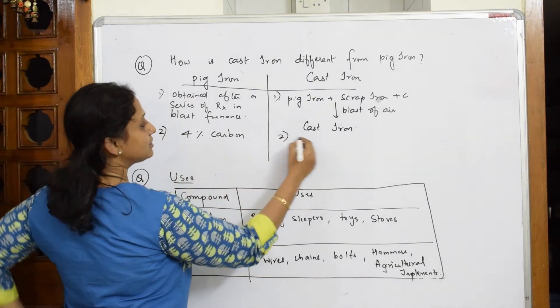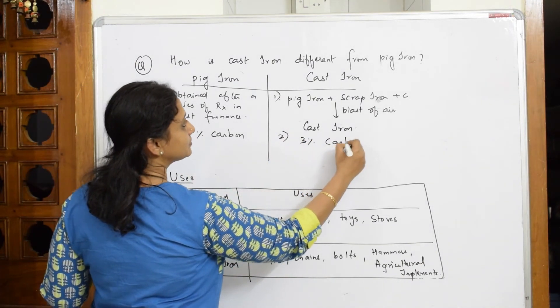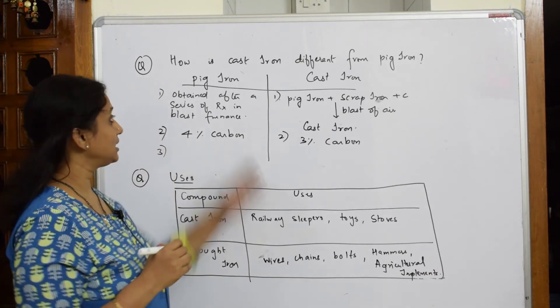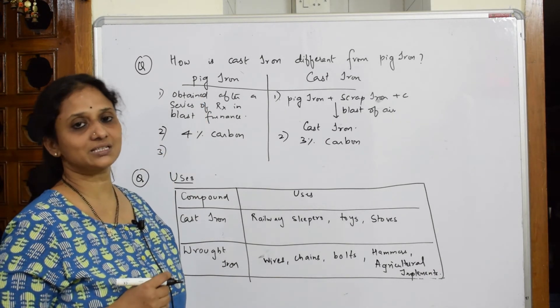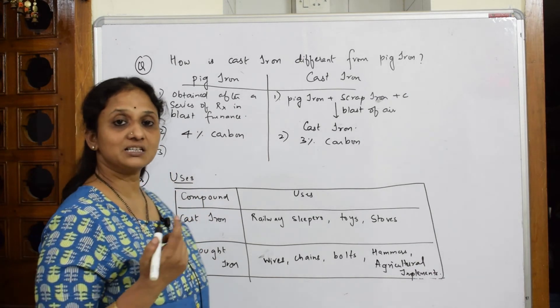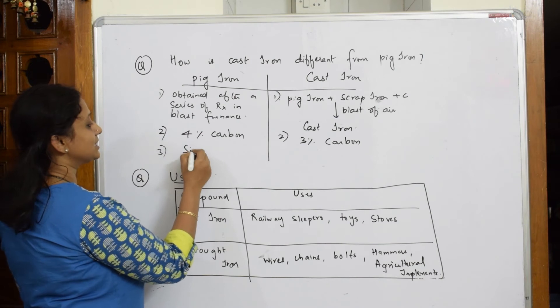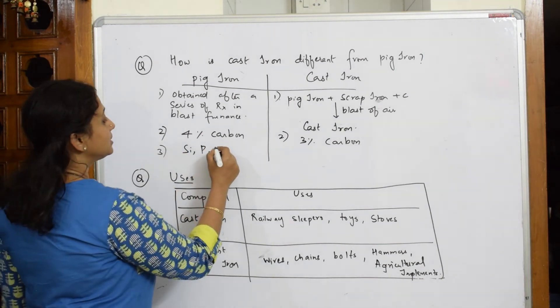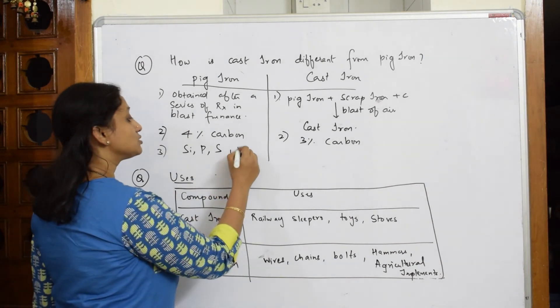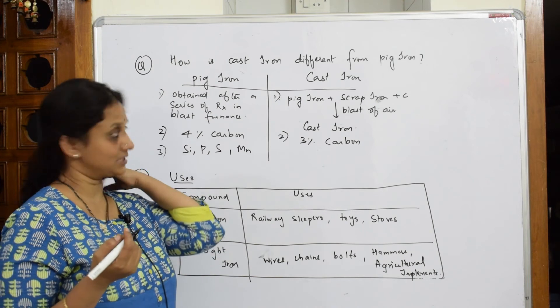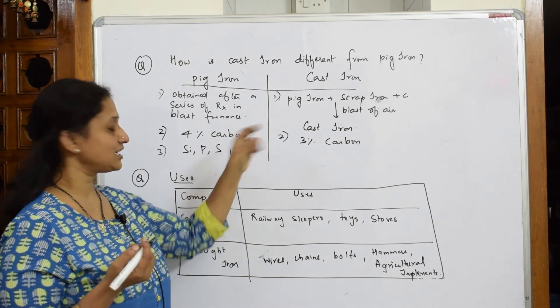Now 4% carbon in pig iron and 3% carbon in cast iron decides the differences. When I speak about the impurities, pig iron, along with this 4% carbon, also has impurities. As we have seen in the blast furnace, it has silica as an impurity, phosphorus as an impurity, sulfur as an impurity, and certain traces of manganese also are present.